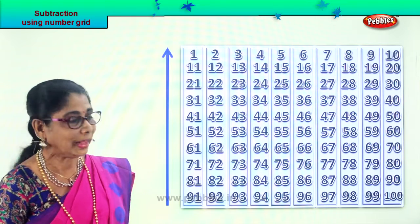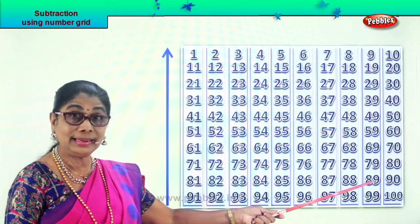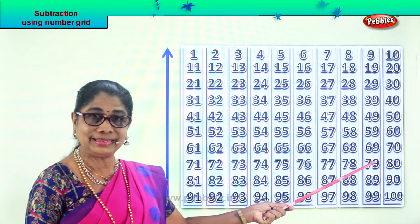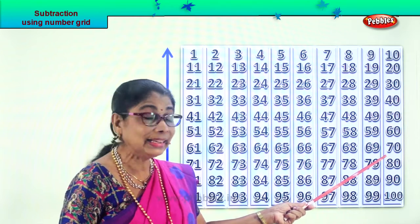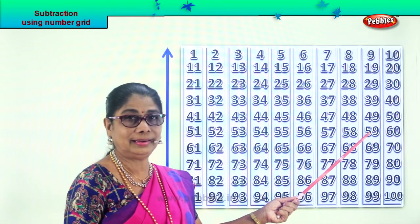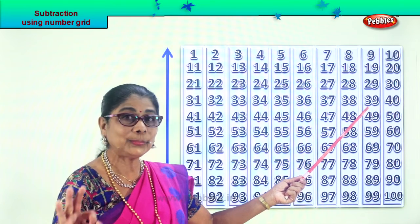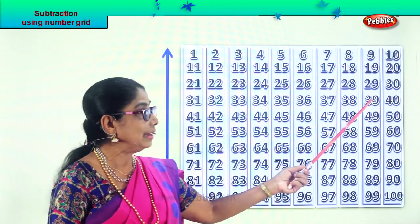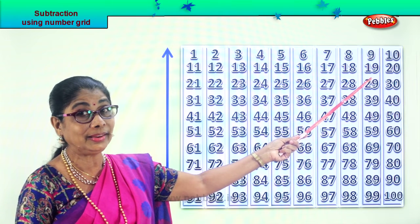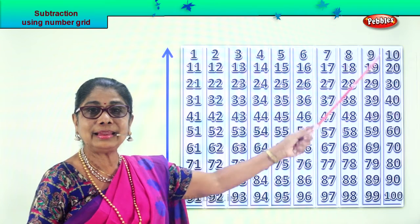Now let's look at 99. From 99 take away 10 — 89. 89 take away 10 — 79. 79 take away 10 — 69. 69 take away 10 — 59. 59 take away 10 — 49. 49 take away 10 — 39. 39 take away 10 — 29. 29 take away 10 — 19. 19 take away 10 — single digit 9.